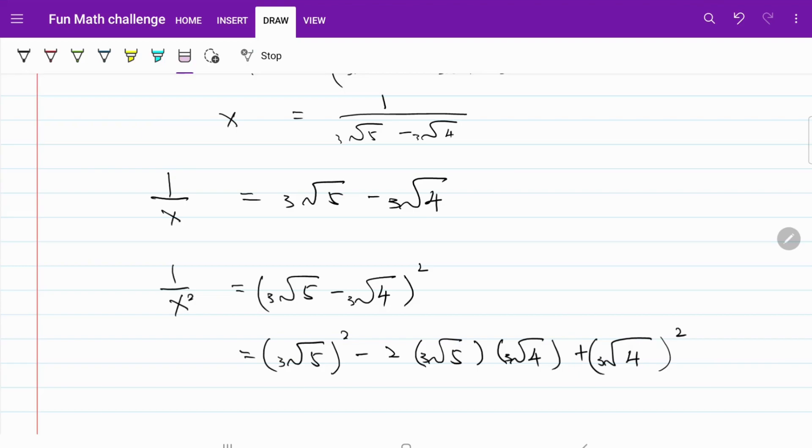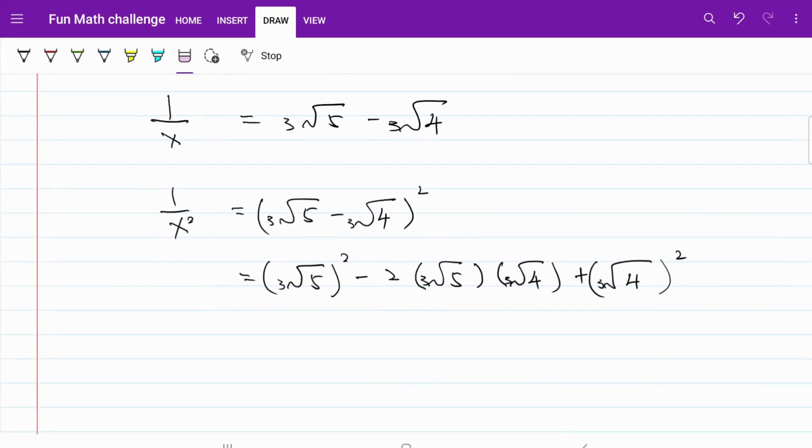Let me clear out this mistake right here. Keep in mind, in the original question, we were told to look for x minus 1 over x squared.